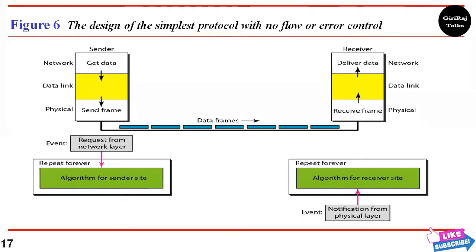In other words, the receiver can never be overwhelmed with incoming frames. There is no need for flow control in this scheme. The data link layer at the sender side gets data from its network layer, makes a frame out of the data, and sends it. The data link layer at the receiver side receives the frame from its physical layer, extracts data from the frame, and delivers the data to its network layer. The data link layers use physical layer services such as signaling and multiplexing for transmission of bits.